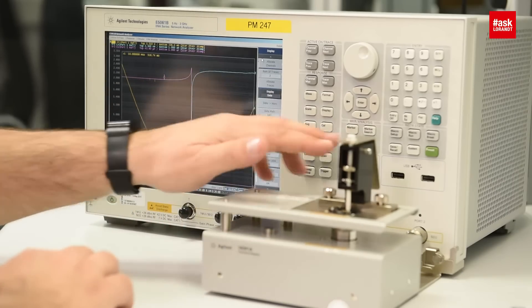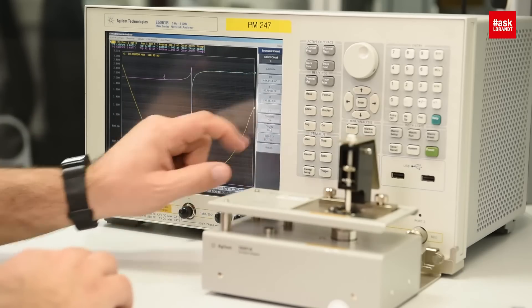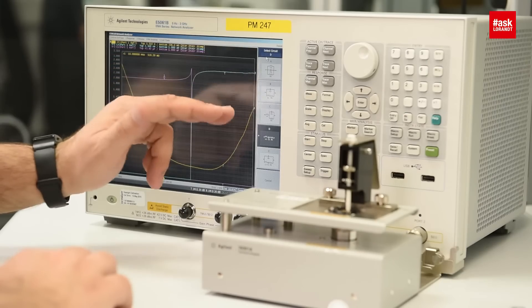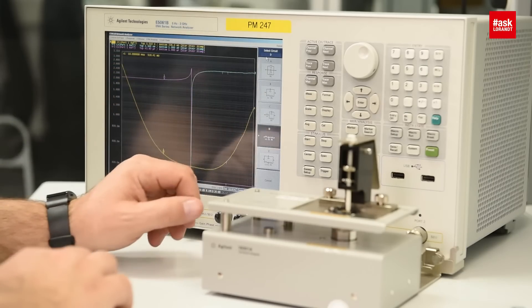Now I will go into the analysis function, then equivalent circuit. I will select the circuit, this time is LCR in serial.